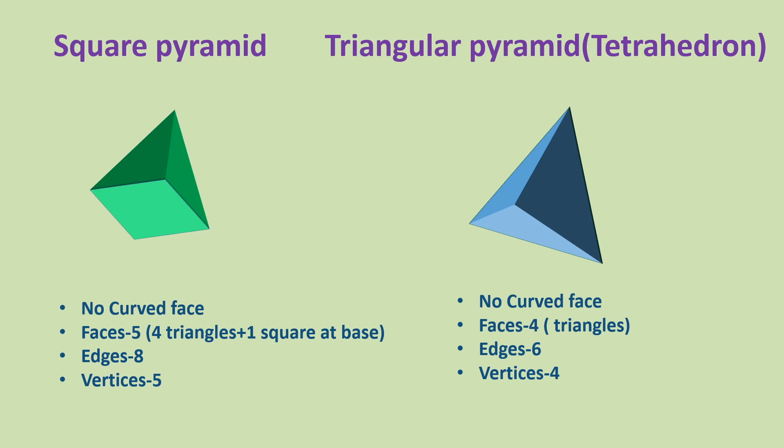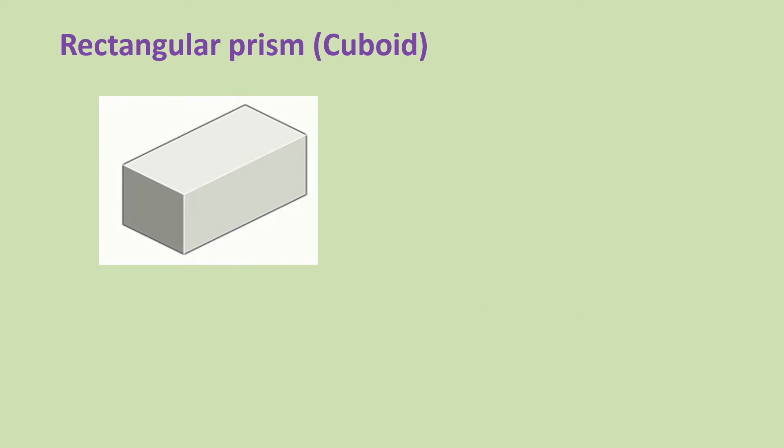It has six edges and four vertices. Next 3D shape is rectangular prism.